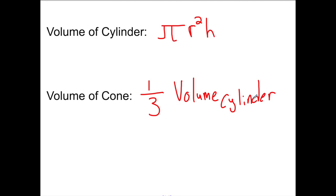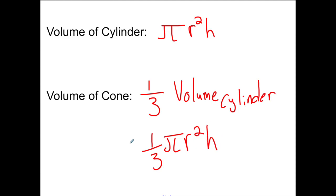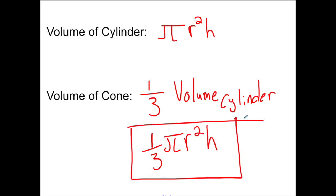In other words, the volume of a cone is one-third times π r squared times the height. So we now have our formula established.